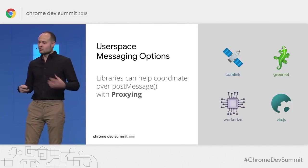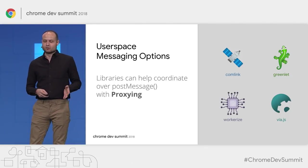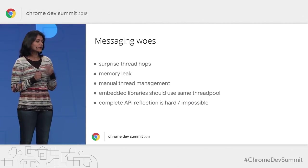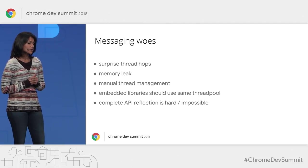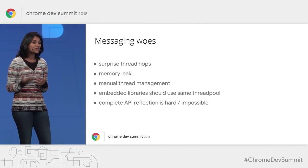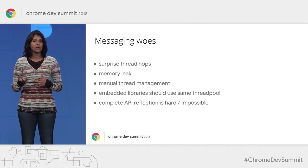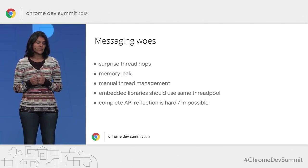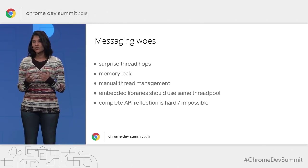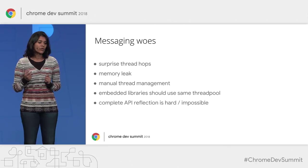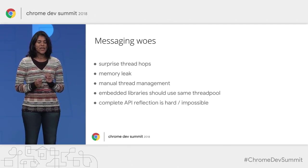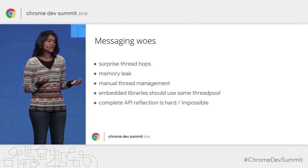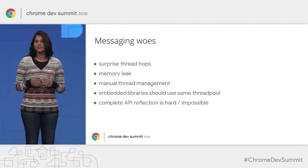We've seen solutions in user land through libraries like Comlink, workerize, and via.js, which help coordinate messaging across boundaries by abstracting postMessage using proxying. Proxying improves over raw postMessage, but comes with downsides: every method call to a proxied object incurs a thread hop cost, which can surprise developers. Platform gaps can cause memory leaks. These APIs don't have a notion of a backing thread pool or thread management. Embedded libraries can't share the same thread or thread pool, and for complex APIs it can be impractical to recreate the API surface cross-thread.